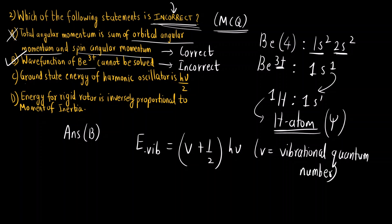Now if I want to find out for the ground state I can write it as E vibrational 0. For ground state what will be the value of vibrational quantum number? It is going to be 0. So 0 plus half hν that is going to be hν/2. So this statement is also correct, so this is not the correct option.